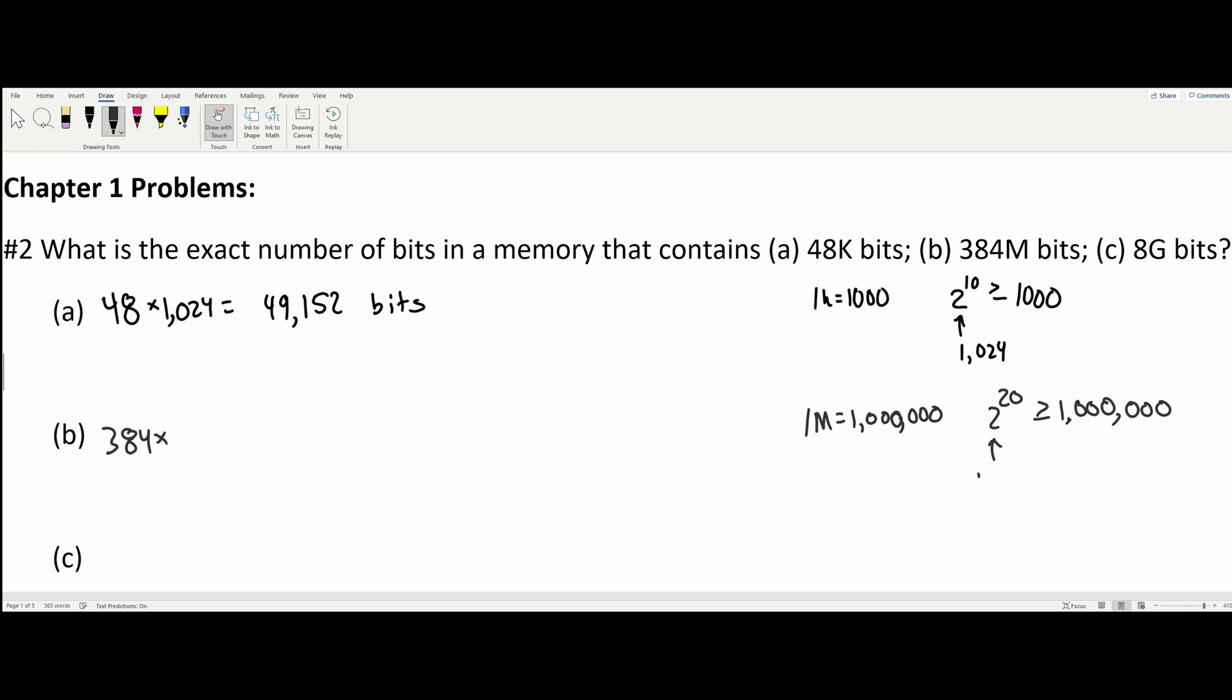And this is going to give us 1,048,576. So we're just going to multiply 384 by that value, and this is going to give us 402,653,184 bits.